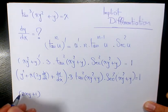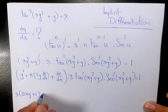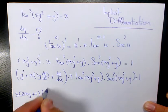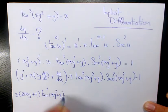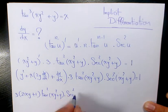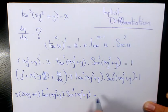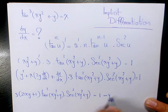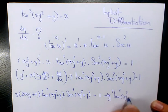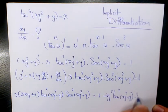I move the 3 here. Tan² of (xy² + y) times secant² of (xy² + y) equals 1 minus 3y² tan² of (xy² + y) times secant² of (xy² + y).